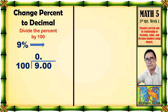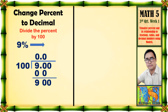Let us divide: 90 divided by 100 cannot be. Dagdagan natin ang zero sa taas. Then, zero times 100 is equal to zero. Let us subtract: 90 minus 0 is 90, so 9 minus 0 is 9. Then, bring down zero. Let us divide: 900 divided by 100 is equivalent to 9.